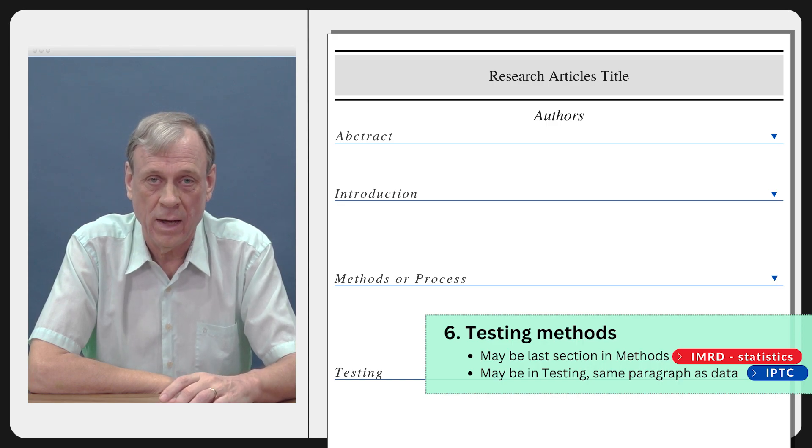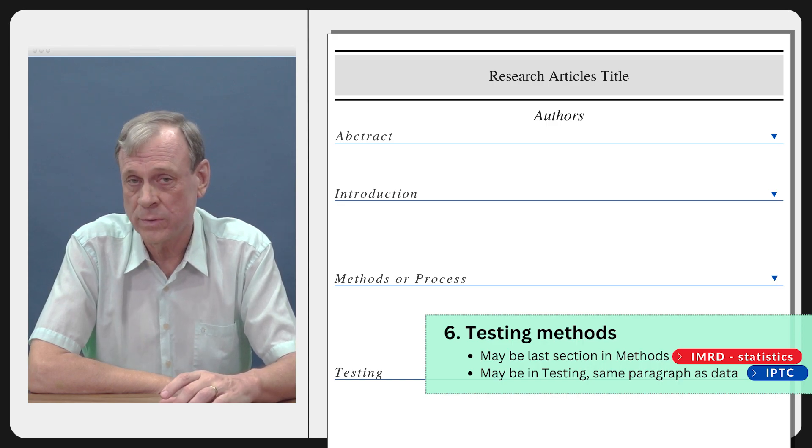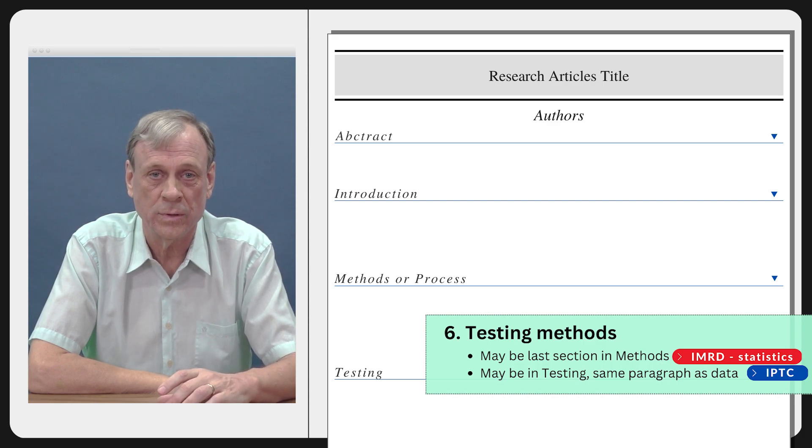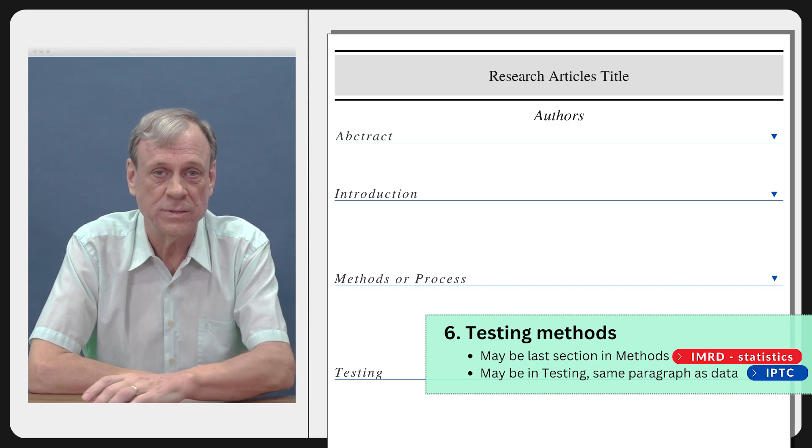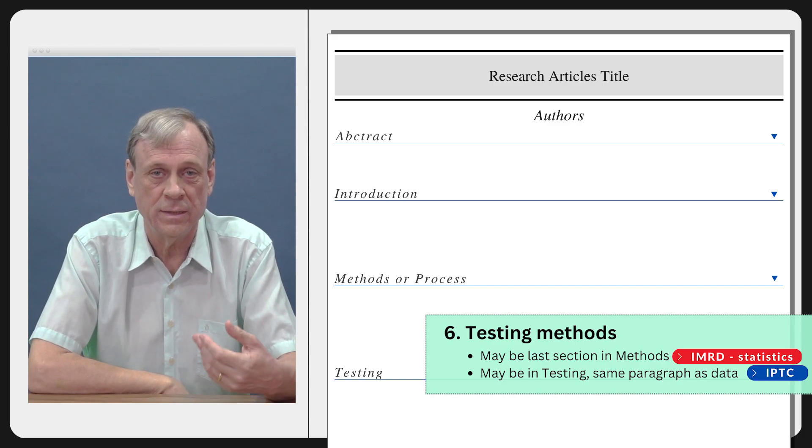And then again the testing methods. Usually in IMRD the last section of the methods will talk about statistical testing, it will talk about how the data were collected and how they were compared with previous work or within that paper. Sometimes it will be called experimental design or something like that. It accomplishes the same purpose of talking about how this data will be collected and analyzed.